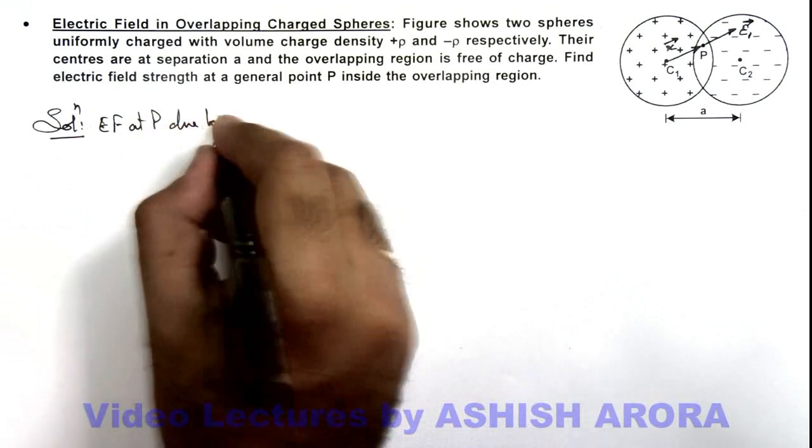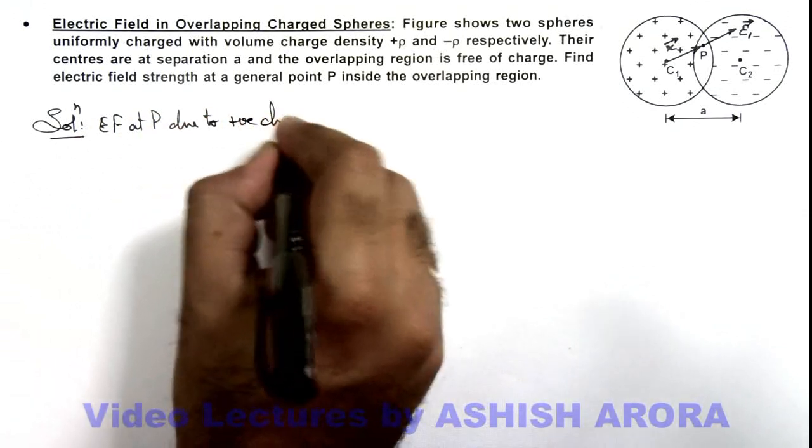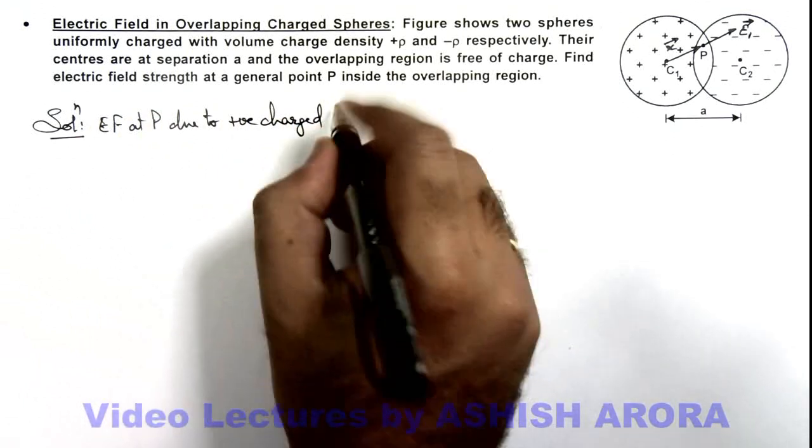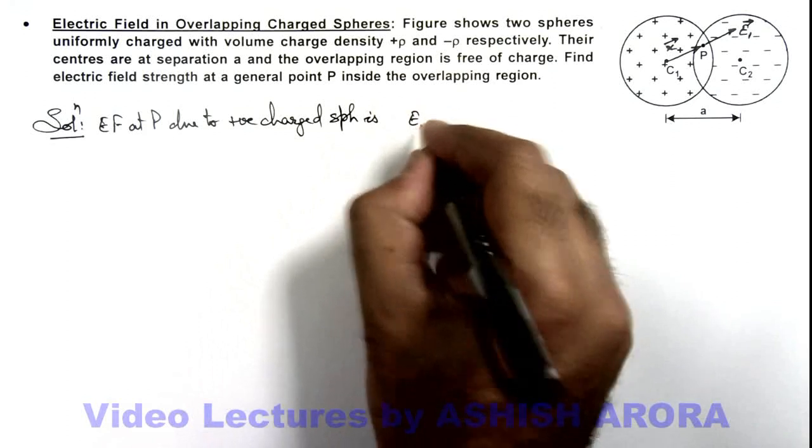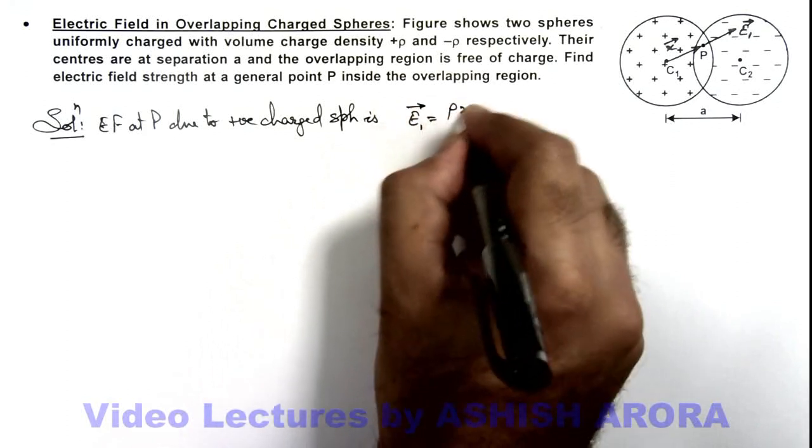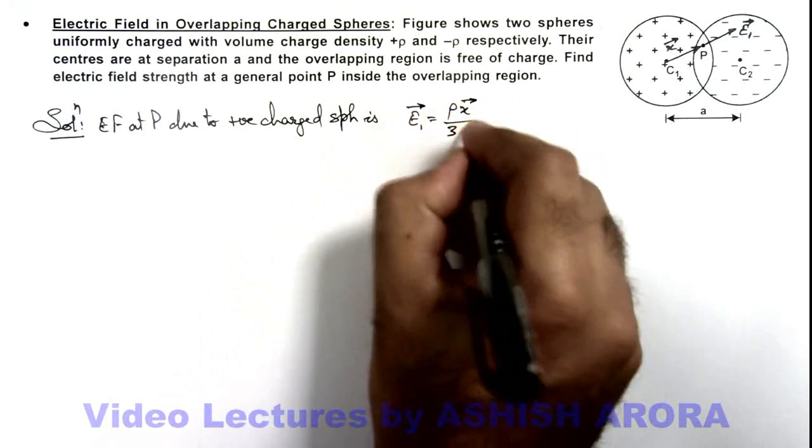Positively charged sphere is, this we can write as E₁ vector and the value will be given as ρ x vector by 3ε₀.